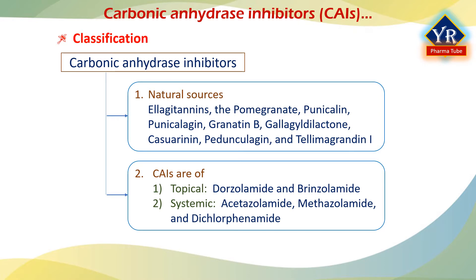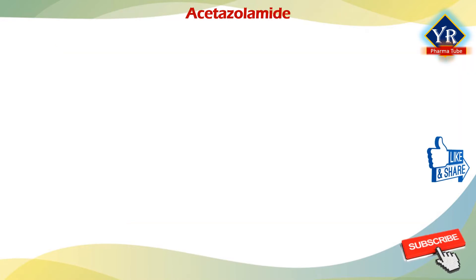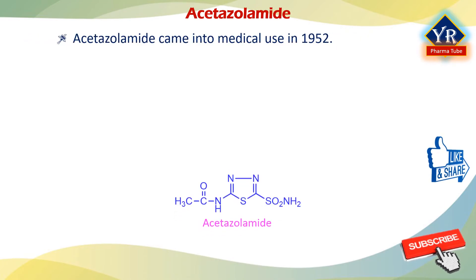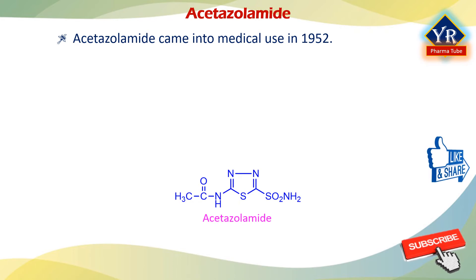The three carbonic anhydrase inhibitors of clinical interest today are acetazolamide, methazolamide, and dichlorphenamide. They have limited usefulness as diuretics and are used in the treatment of glaucoma and for the prevention of acute mountain sickness. Coming to the individual drugs, the first drug is acetazolamide, which came into medical use in 1952.